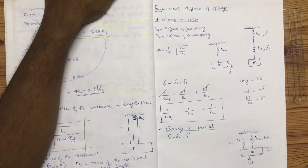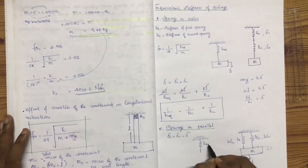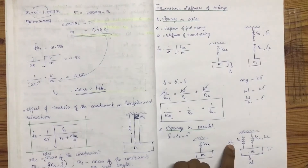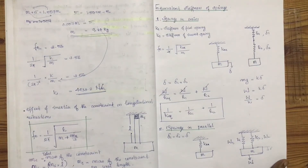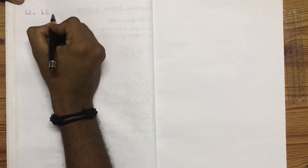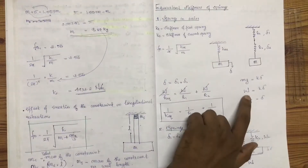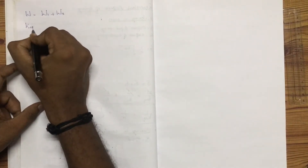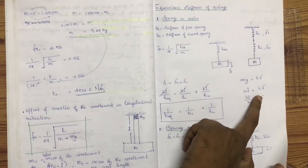Since delta 1 equals delta 2 equals delta, we take the equivalent spring K. The equilibrium condition gives W equals K times delta. We have K1 times delta for the first spring, so W1 equals K1 times delta 1, and W2 equals K2 times delta 2.